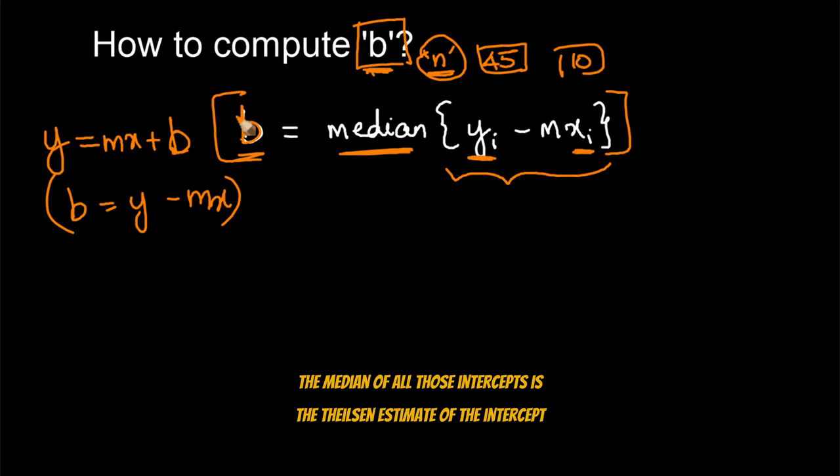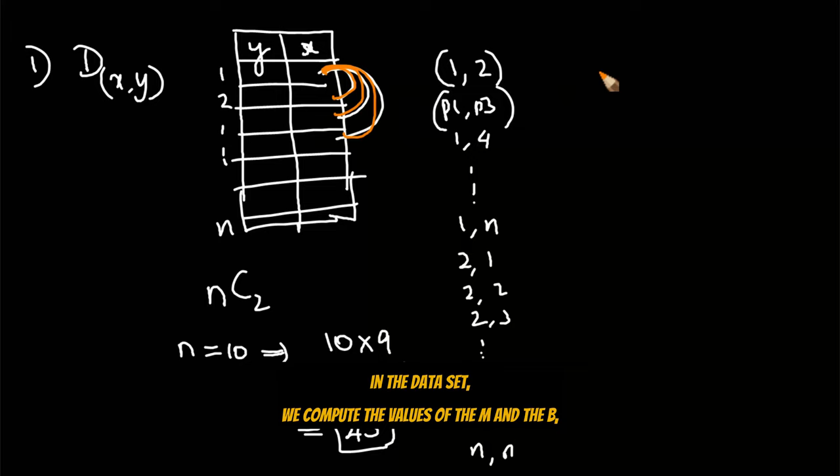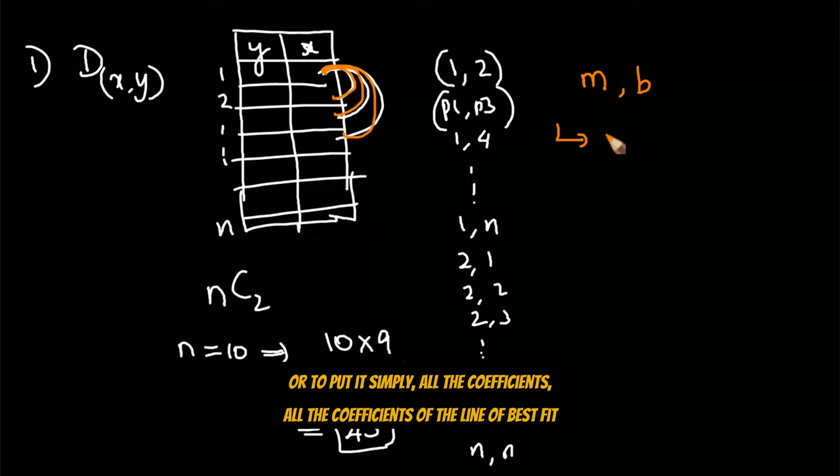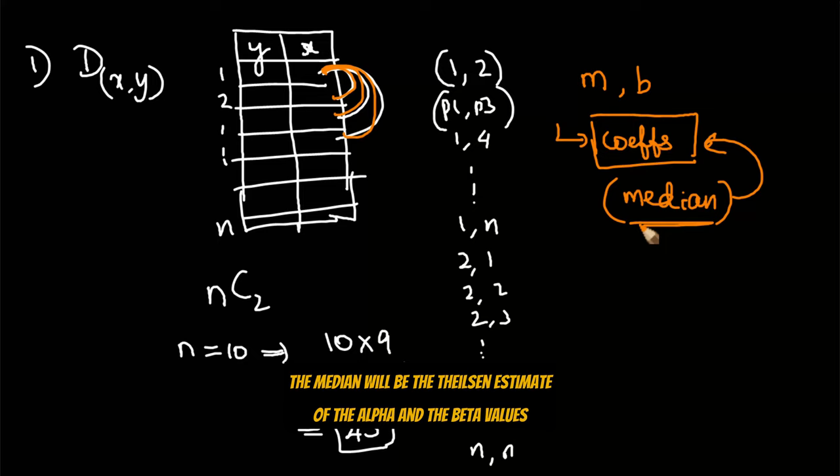So to simply put in a nutshell, we take the data set, take all the possible pairs of records in the data set, we compute the values of the m and the b or to put it simply, all the coefficients from the line of best fit we compute it and compute the median of all the coefficients. The median will be the Theil-Sen estimate of the alpha and beta values.